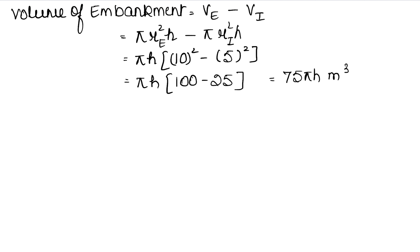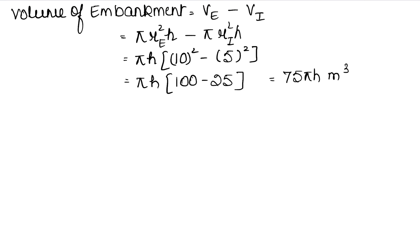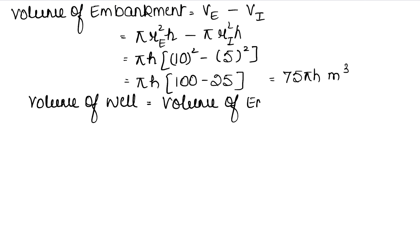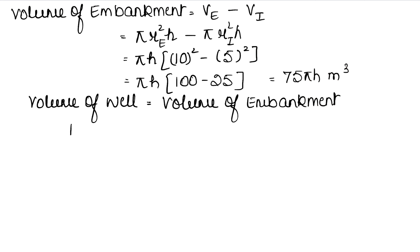Since all the earth dug from the well was spread around to form the embankment, the volume of the well equals the volume of the embankment. So, volume of well = volume of embankment, meaning 1100 cubic meters = 75πh.